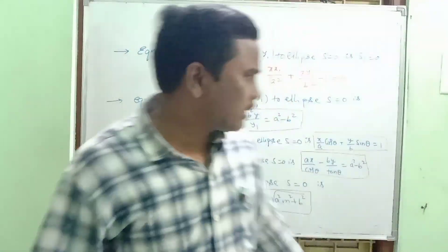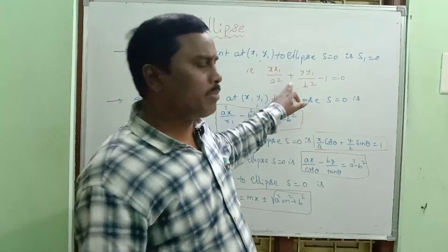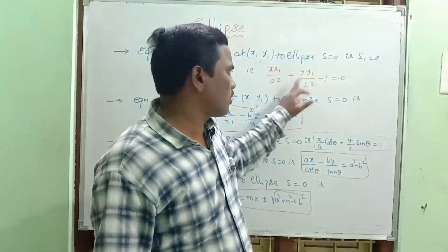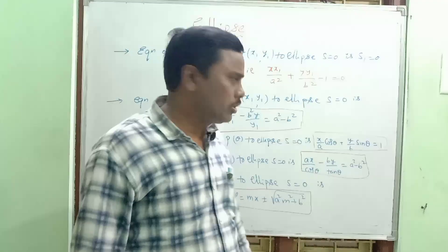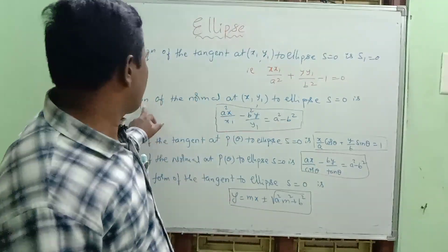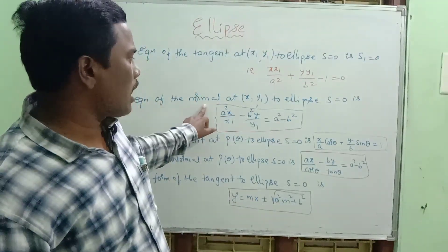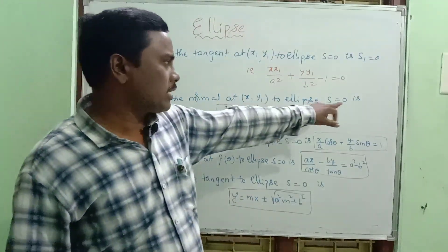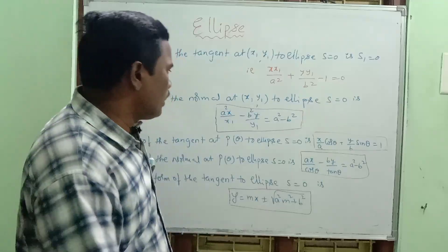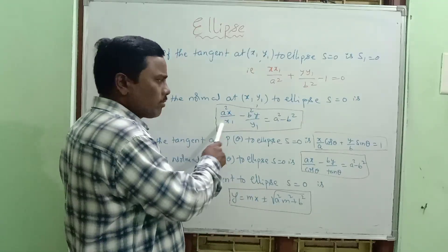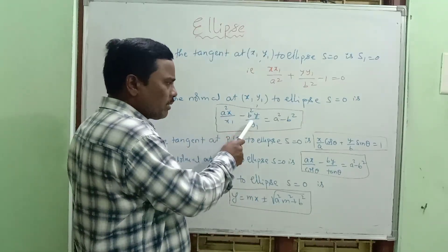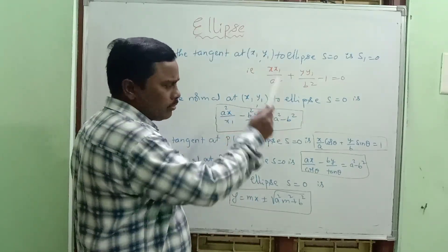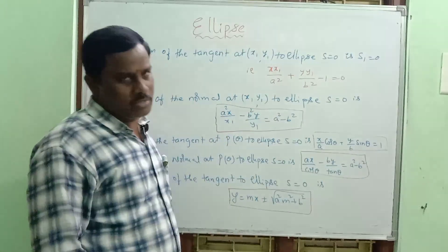The S1 formula is: xx1 by a square plus yy1 by b square minus 1 equal to 0. The equation of the normal at (x1, y1) to the ellipse S equal to 0 is: a square x by x1 minus b square y by y1 equal to a square minus b square.